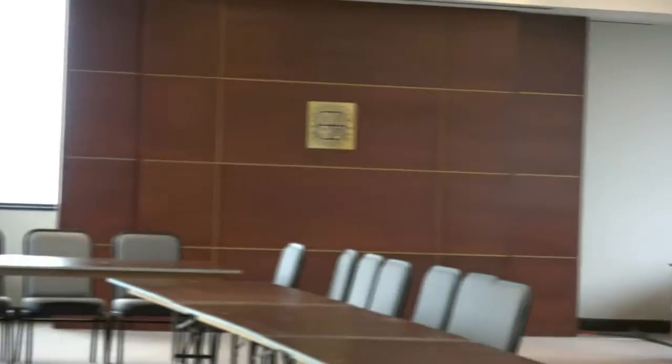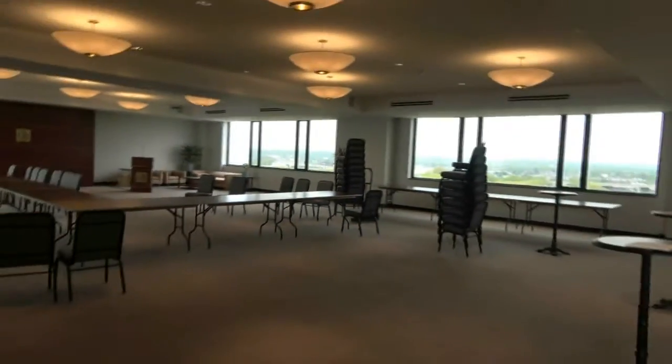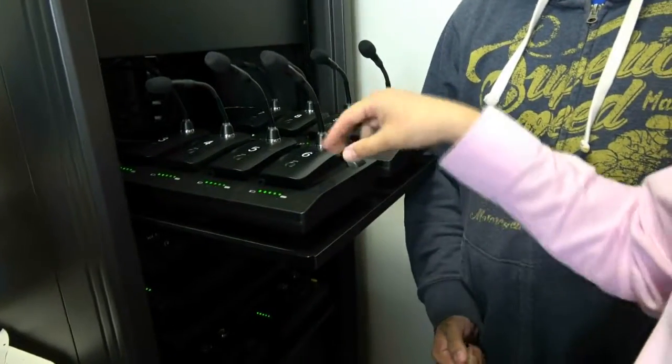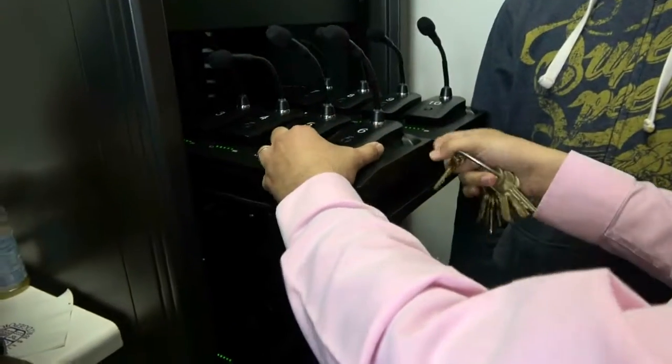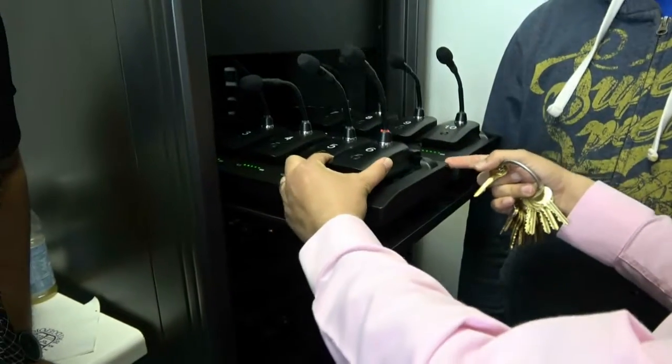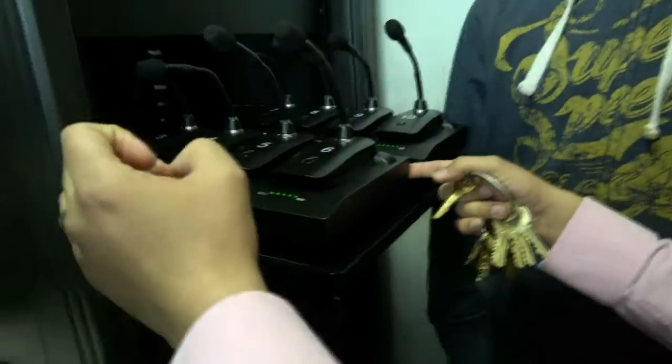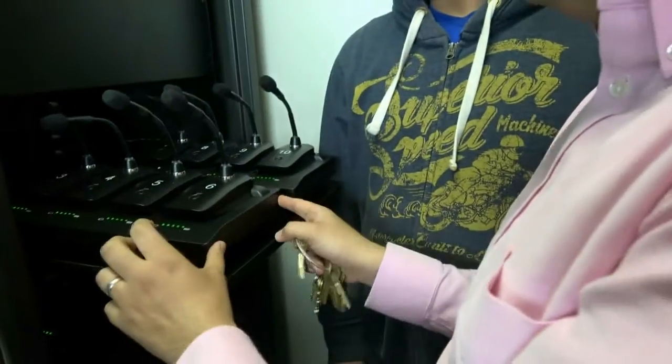This control room includes, come closer guys. In this control room we have 23 wireless microphones as you can see here. All of them have been attached to the power. We power them all the time, we always keep them powered. We only take them off when we have an event to set them up.